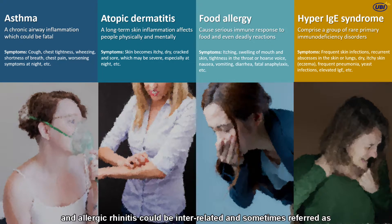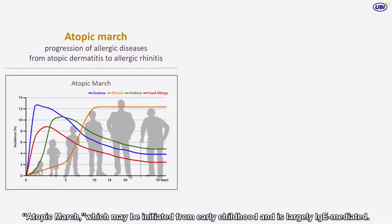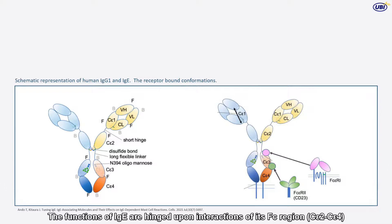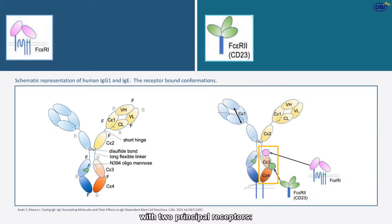asthma, and allergic rhinitis could be interrelated and sometimes referred to as atopic march, which may be initiated from early childhood and is largely IgE-mediated. The functions of IgE are hinged upon interactions of its FC region, C-Epsilon-2 to C-Epsilon-4, with two principal receptors.